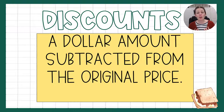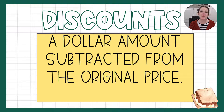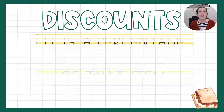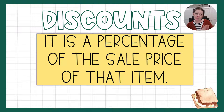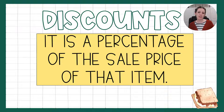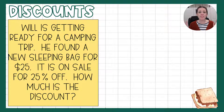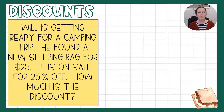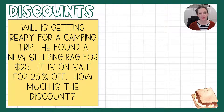Discounts are a dollar amount subtracted from the original price. It is when something is on sale and you don't have to pay full price. Like taxes and tips that we talked about in our last video, it is a percentage of the sale price of the item that you are buying. You're going to see that these are very similar to tax and tip, but they're the opposite because we're not paying more — we're going to pay less.